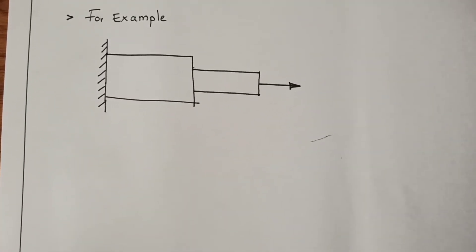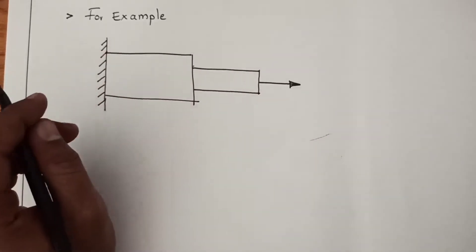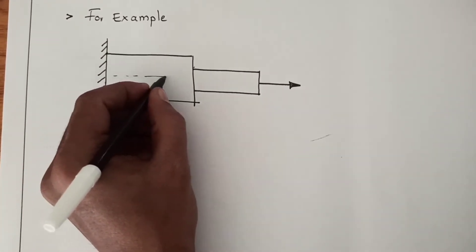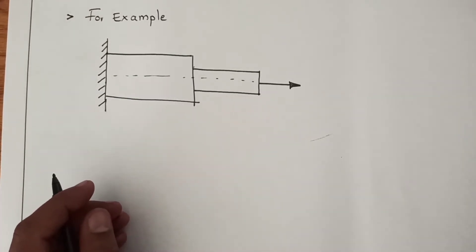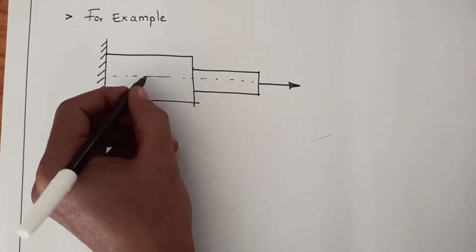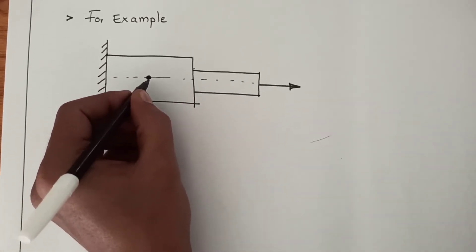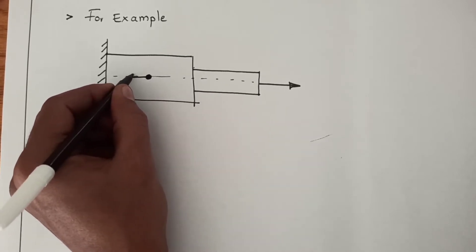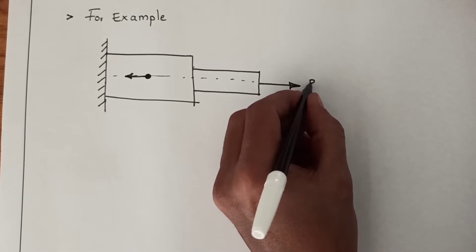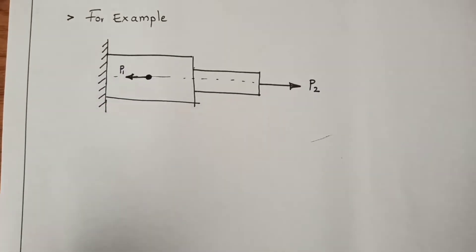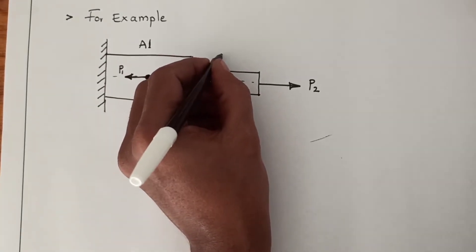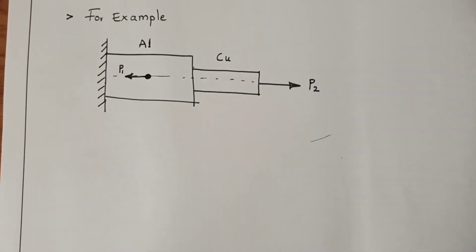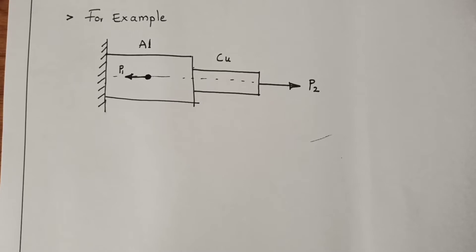So there is a bar element, the load is acting along the axis here and you need to divide this into different elements. For example, one more load is applied here in the opposite direction. Let us say this is P2 and this is P1, two loads are applied. And this is aluminum and this is copper. So both materials are different.